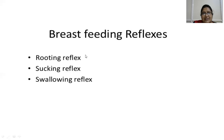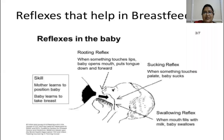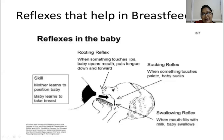The breastfeeding reflexes necessary for attachment, sucking, and swallowing are the rooting reflex, sucking reflex, and swallowing reflex. In the rooting reflex, when something touches the lips, the baby opens its mouth and puts the tongue down and forward. In the sucking reflex, when something touches the palate, the baby sucks. In the swallowing reflex, when the mouth fills with milk, the baby swallows — it is a skill both mother and baby have to learn.